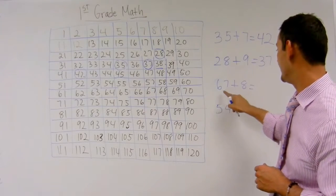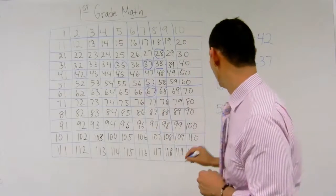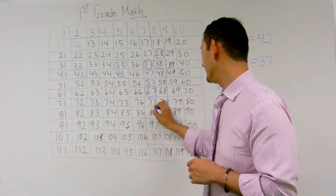Now let's take a look at this one here. 67 plus 8. Here I have 67. I'm going to move down 10 to be at 77.